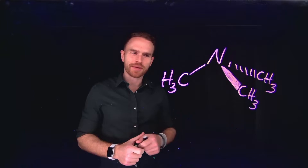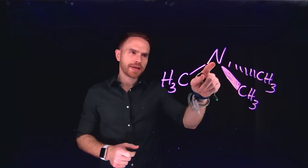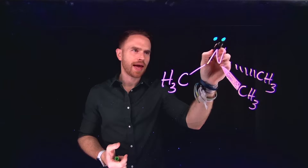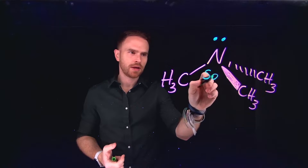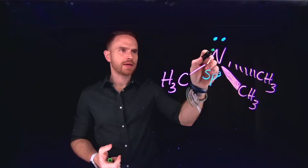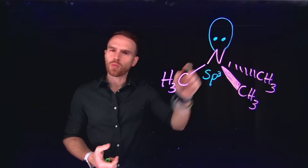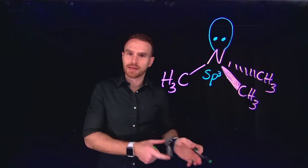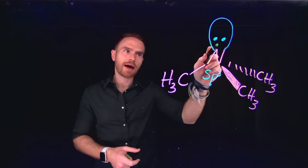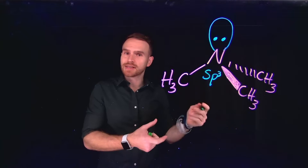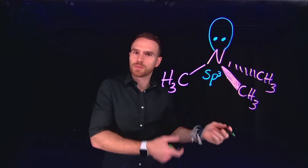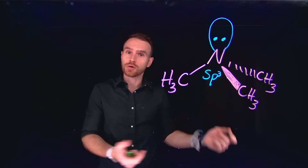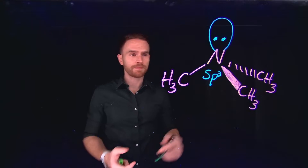Now let's talk about the structure of amines. The nitrogen atom in any amine is typically going to be sp3 hybridized. Because of this, the sp3 orbital is the one that contains the lone pair. Shortly, we're going to talk about the reactivity of amines — largely, this happens because nitrogen, since it has that lone pair, can act as a Lewis base towards other atoms or molecules. In other words, it can act as a nucleophile towards electrophiles.